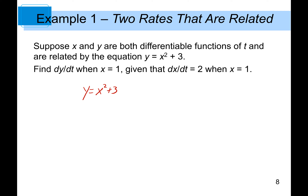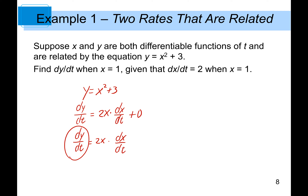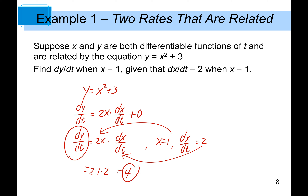First, differentiate implicitly with respect to time t: dy/dt = 2x · (dx/dt). The derivative of the constant becomes 0. Now, since x = 1 and dx/dt = 2, substitute both values: dy/dt = 2 × 1 × 2 = 4. That means the rate of change of y with respect to time t is 4 units.